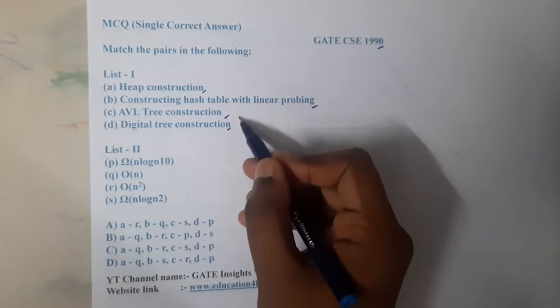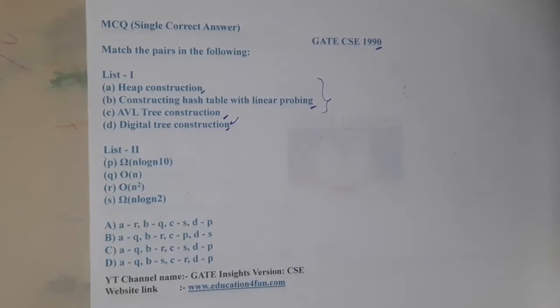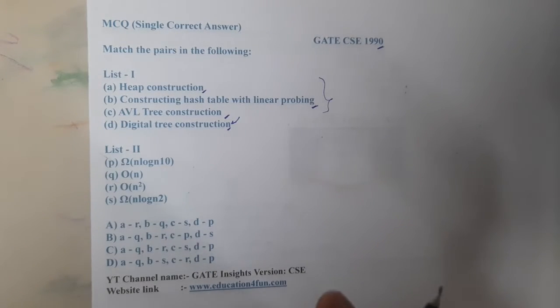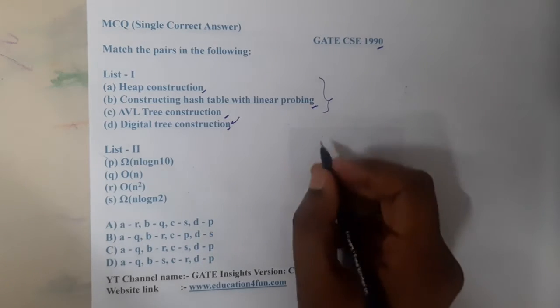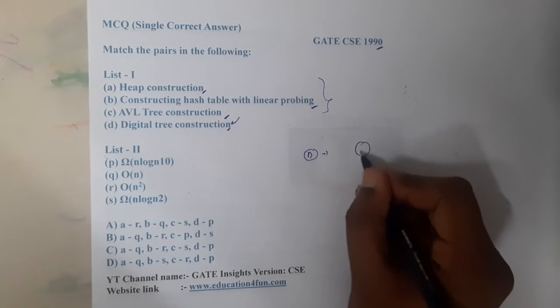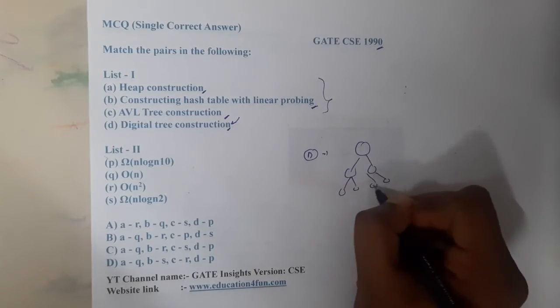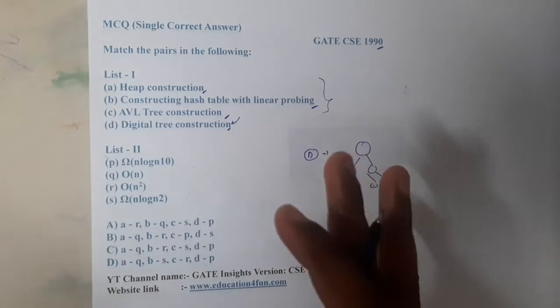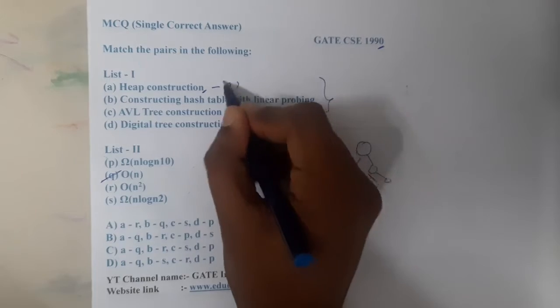I don't know that much about digital tree, so by applying options let us try to guess the answer. First of all, what is the construction cost of heap? If there are n elements, you are just going to place them in their locations. That is heap construction, so it will be O(n). So A will be Q, and with that you can remove A as an option.